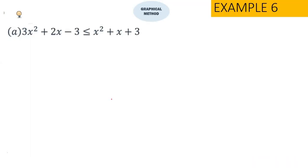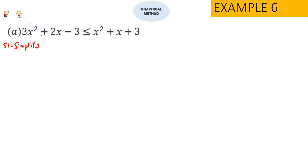Okay, so now come back to our quadratic inequalities. Let us look into the first example. Step one should be to simplify first — make x squared with a positive coefficient as a subject. So for this one we would have 2x squared plus x minus 6 equals to 0.